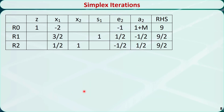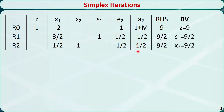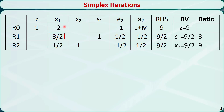We need to change the pivot element to 1 and make it disappear from other rows using elementary row operations. This is the updated tableau. x2 and s1 are basic variables and others are non-basic variables. Setting non-basic variables to 0: x2 is equal to 9/2, s1 is equal to 9/2, and z is equal to 9. The entering variable will be x1 because it has the most negative coefficient in row 0. The ratios are 3 and 9, and row 1 has the smallest ratio, so it is the pivot row.